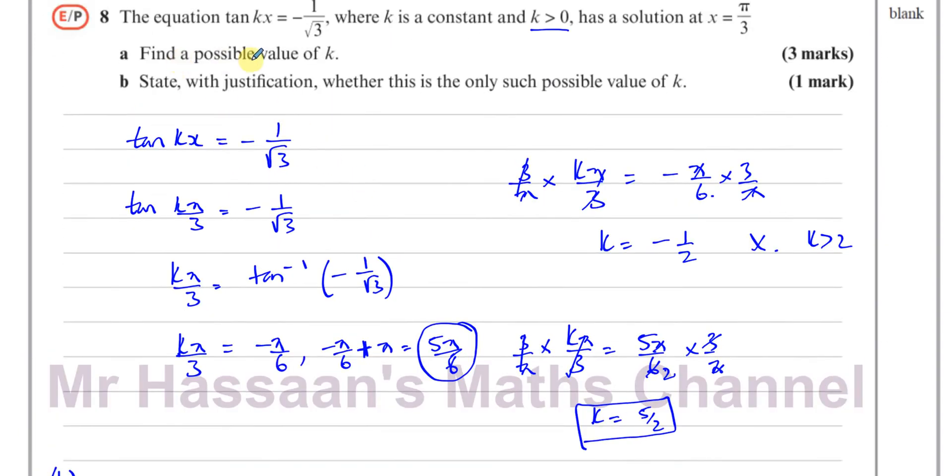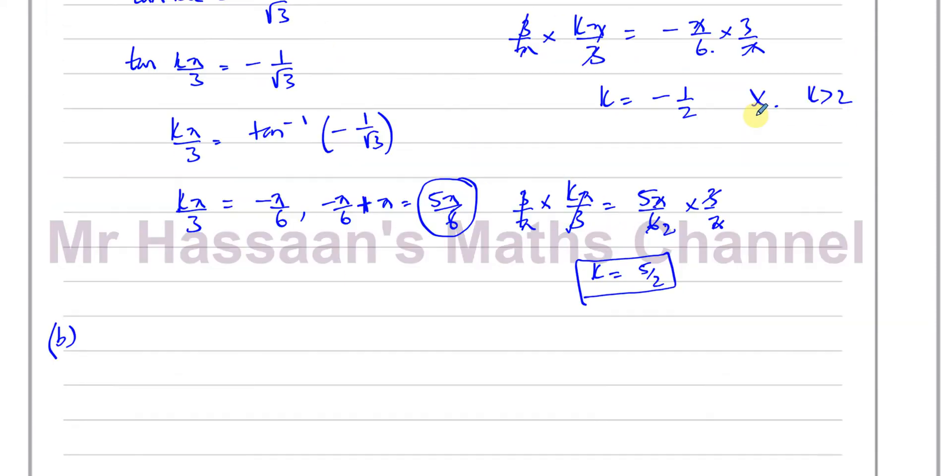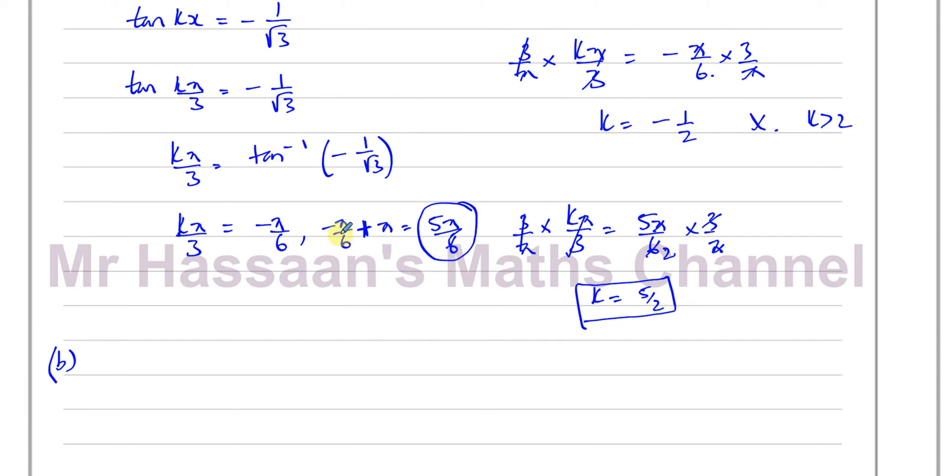Now, the way the question is worded, it kind of answers part b, because it says state with justification whether this is the only such possible value of k. Well, it's not, because there are many angles which will give us this value of minus 1 over root 3 when you find the inverse tan. One was minus π over 6, the other is 5π over 6. In fact, another one's going to be another π away from 5π over 6.